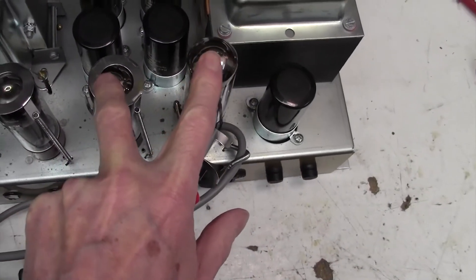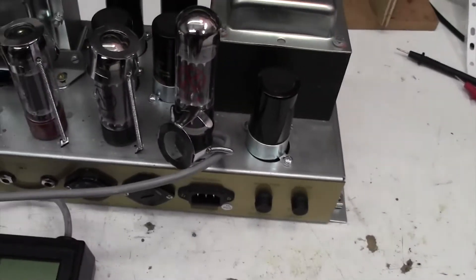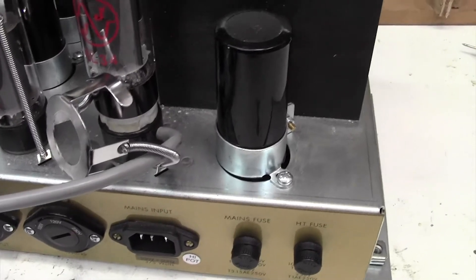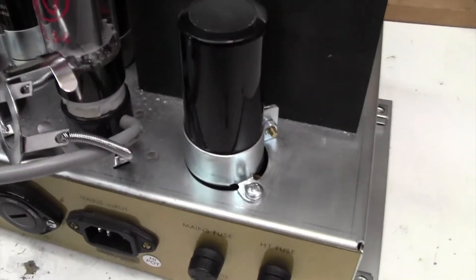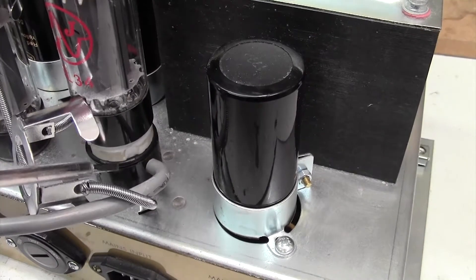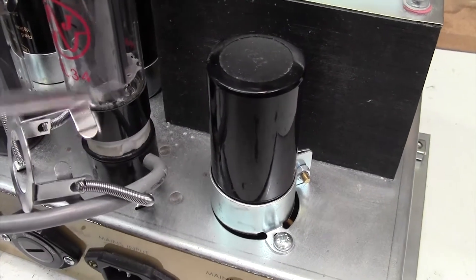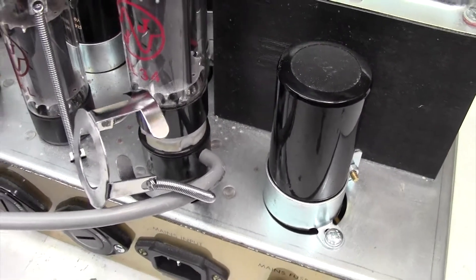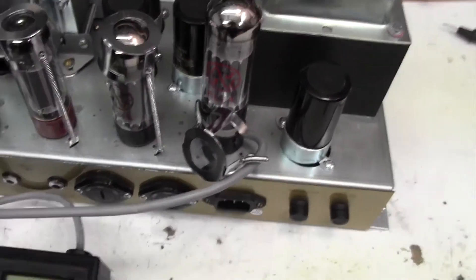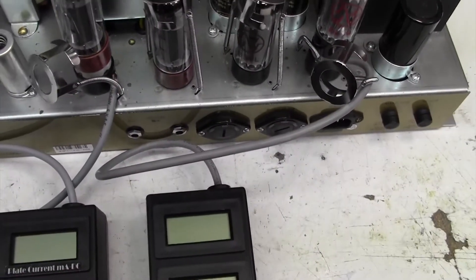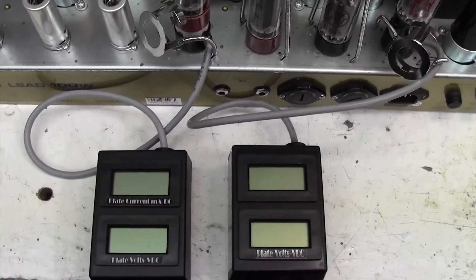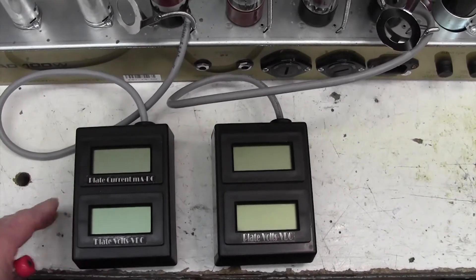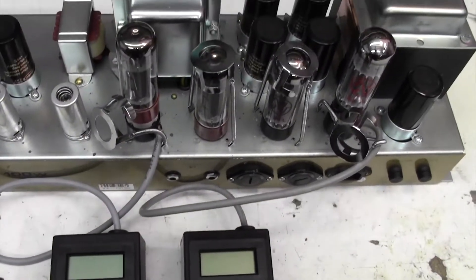In case you don't know, the bias meters simply plug between the socket and the valve. You plug this into the socket, you plug the valve into the socket on top of the bias probe. I use two bias probes because I've got them and I can simultaneously monitor the current through both halves. But you don't need to do this if you've got a good quad matched pair of tubes.